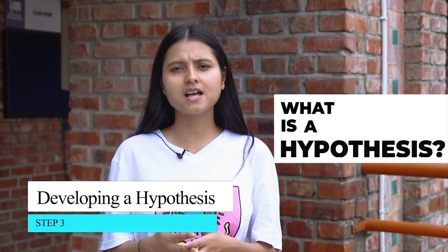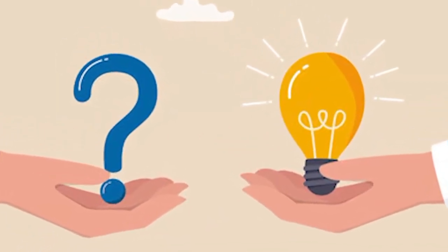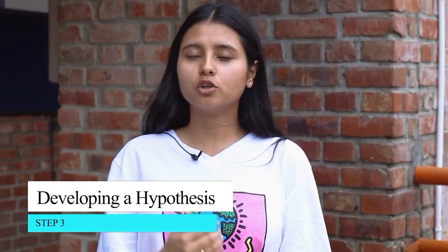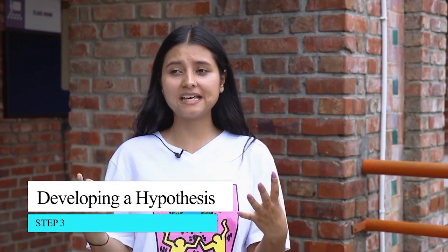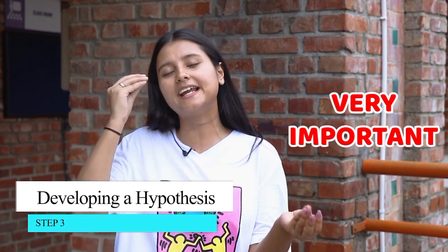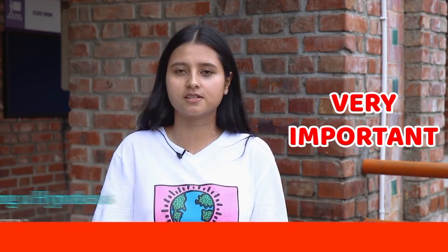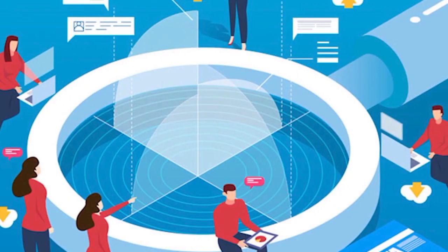The third step is developing a hypothesis. A hypothesis is a tentative answer to a question — at the end of your research, it could be true or false. A hypothesis is very important because it gives you a frame, a method, and a tentative idea of your research. The fourth step is forming a research design, which gives you an idea of how you're going to do your research and how you'll design the whole research process.